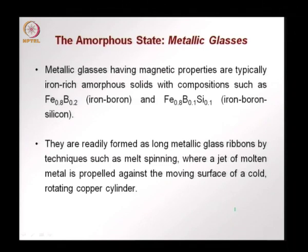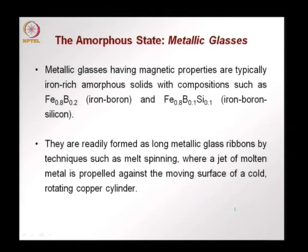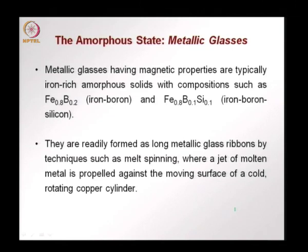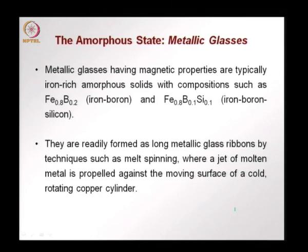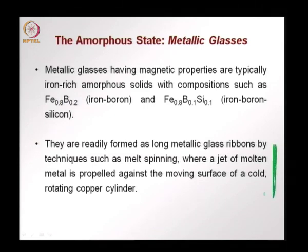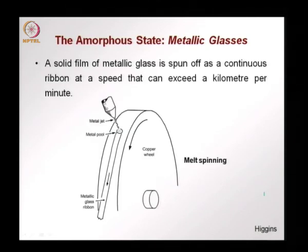Metallic glasses with magnetic properties have also been developed. They are typically iron-rich amorphous solids with compositions such as iron-boron and iron-boron-silicon. These are formed into long metallic glass ribbons by a technique called melt spinning, where a jet stream of molten glass is propelled and shot against a moving surface, such as a cold rotating copper cylinder. When the jet hits the cold cylinder, it cools down immediately.